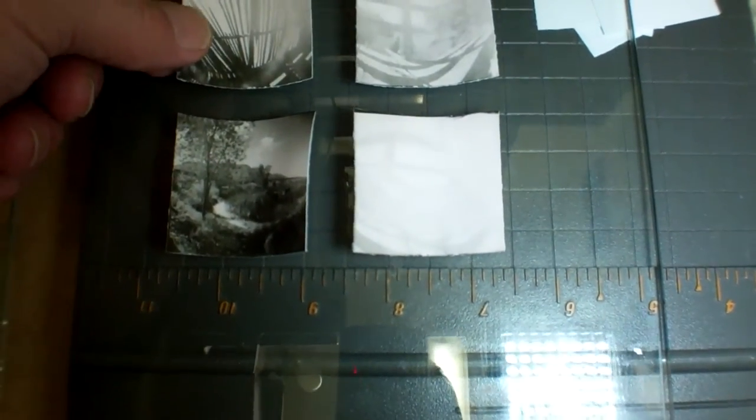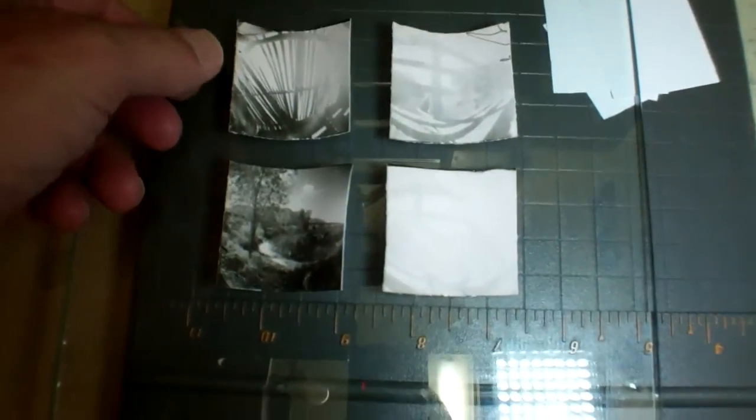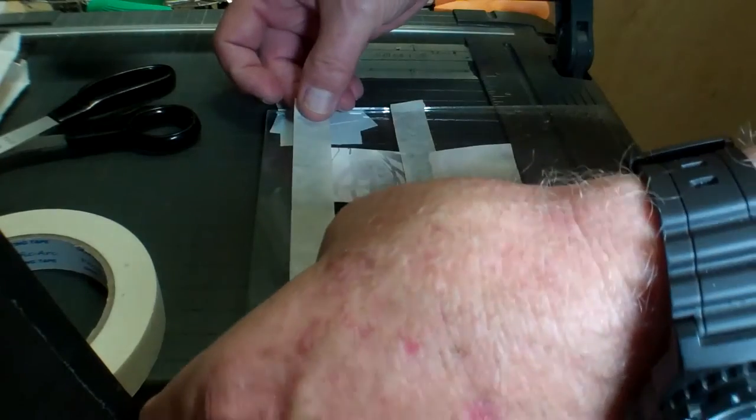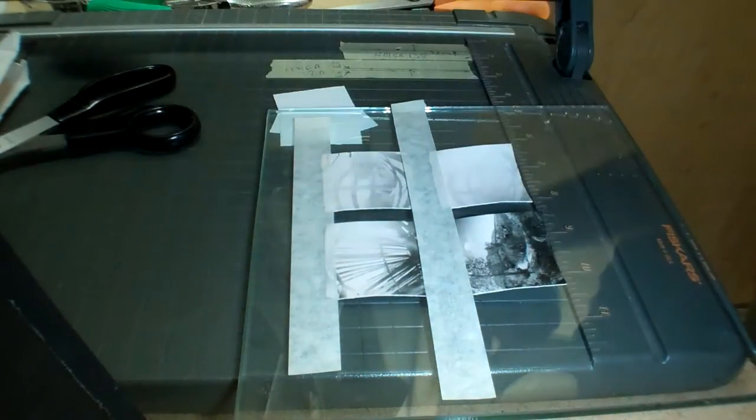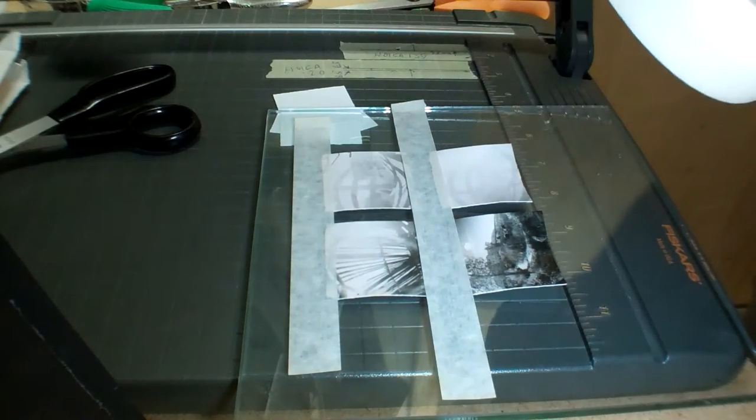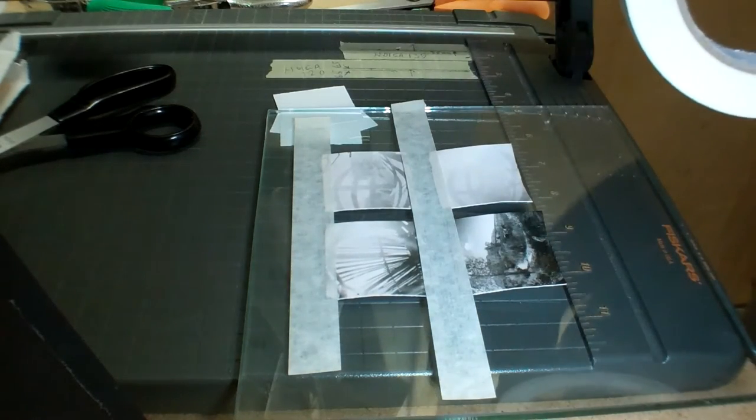So I've squeegeed and wiped on the back side of the paper towel these four pictures. And now I'm laying them out on a sheet of glass. And you want to get them spaced so that the distance between them is a little bit smaller than the width of your tape. And then I'm going to be taping them together. So I overlap the tape about roughly a couple millimeters, maybe an eighth of an inch.